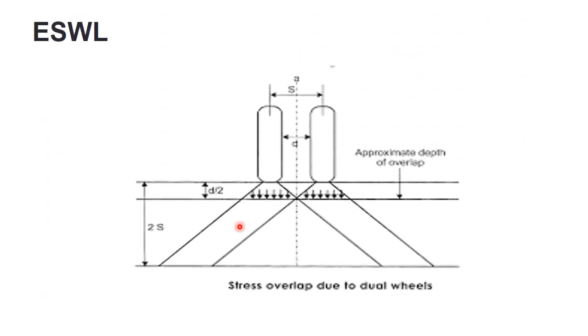Equivalent single wheel load: In a heavy vehicle, the rear axle in general has two wheels at one side instead of a single wheel. Pressure at a certain depth below cannot be obtained by numerically adding the pressure caused by each wheel load, so equivalent single wheel load is used. It is the single wheel having the same contact pressure which produces the same value of maximum stress, deflection, and contact pressure at a desired depth as two individual wheels produce.